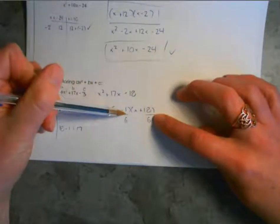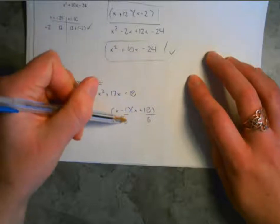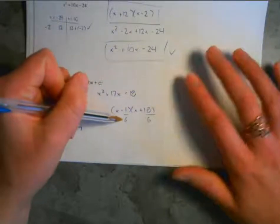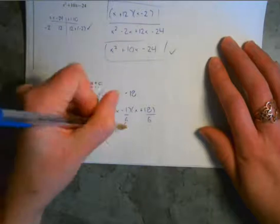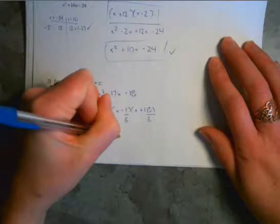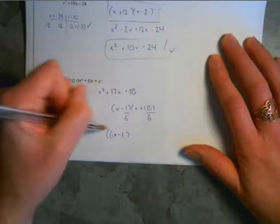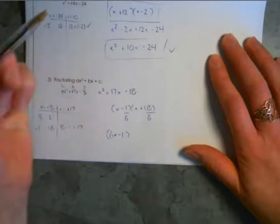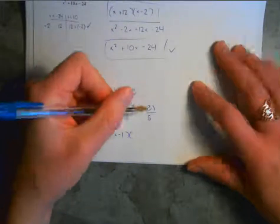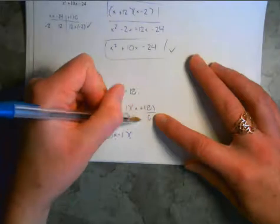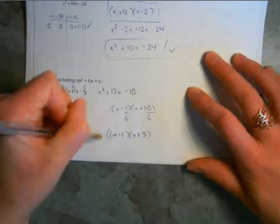If you end up with a fraction — like 1 over 6, which won't reduce to a whole number — what you do is take that 6 and multiply it out in front of the x, modifying your bracket. So the 6 swings up, giving 6x minus 1. For the other bracket, 18 divided by 6 does give a whole number — 18 divided by 6 is 3. So when division gives a whole number, you don't need to move anything next to the x; it's just x plus 3. That should be our final answer.